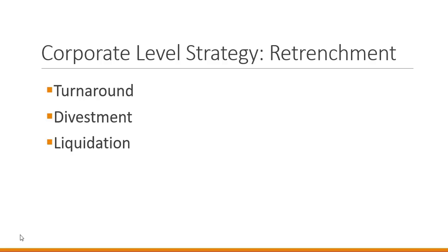Retrenchment options include turnaround, divestiture, and liquidation. We can turn around a division or company by changing something so it becomes a successful entity. We can divest — find a buyer, negotiate a sales price, and exit that business. Or if we can't turn the business around and can't find a buyer, we liquidate: sell the assets, pay off the liabilities, and whatever cash remains goes to the corporation or, if it was the entire corporate entity, is distributed to the shareholders.